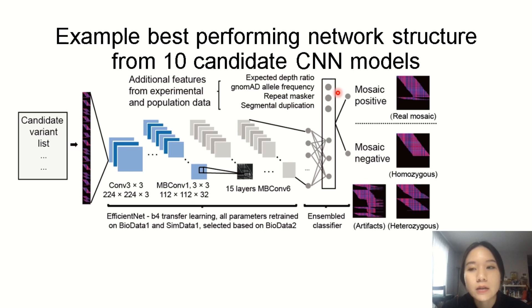In the end, Deep Mosaic classifies your candidate variants into mosaic positive and mosaic negative. The positives are the real mosaic variants, and the negatives could include homozygous variants, heterozygous variants, and artifacts.